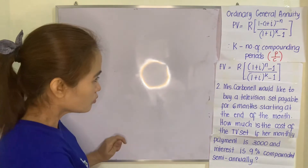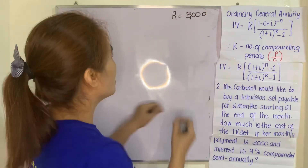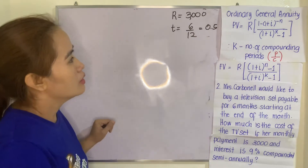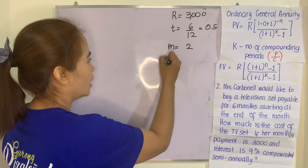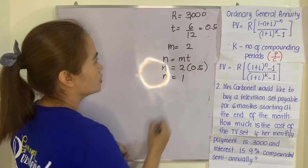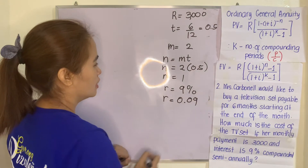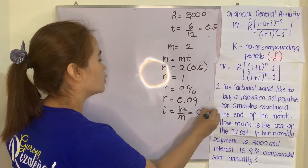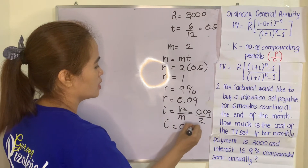Let us identify the given. R equals 3,000. T is six months, which is 6/12 or 0.5 years. M is 2 (semi-annually), so N equals M times T equals 2 times 0.5, giving N equal to 1. The interest rate r is 9%, so r equals 0.09. I equals r divided by M, that is 0.09 divided by 2, giving I equal to 0.045.